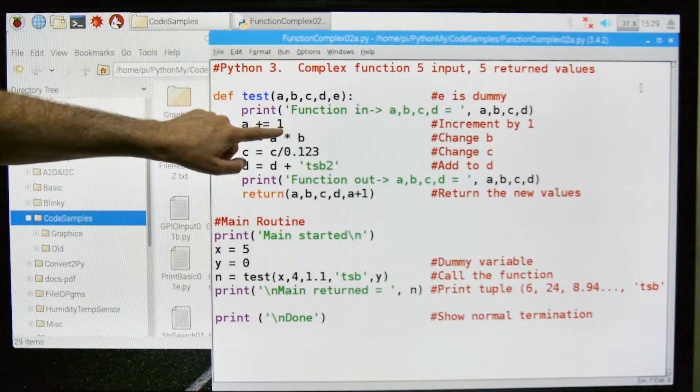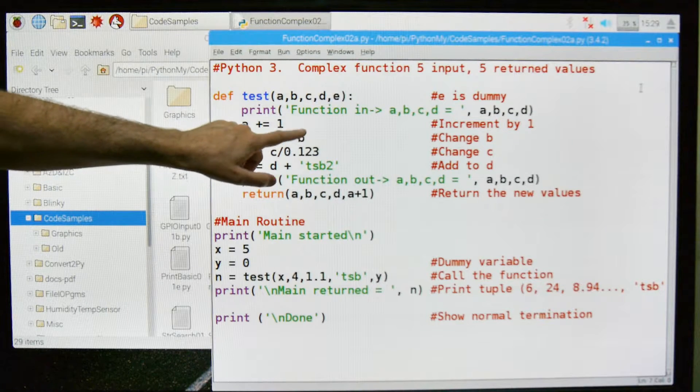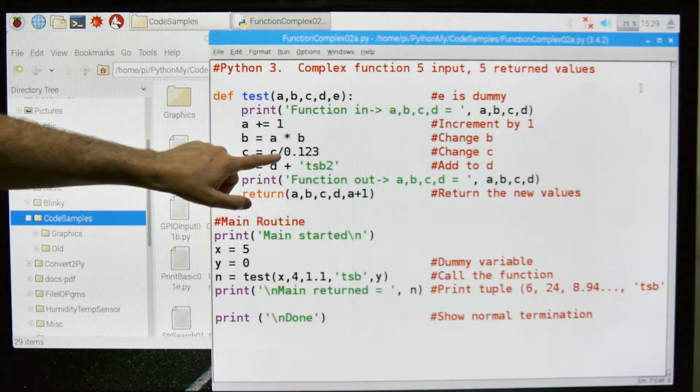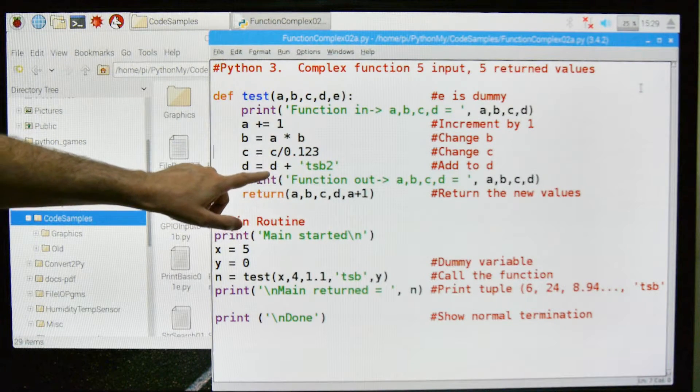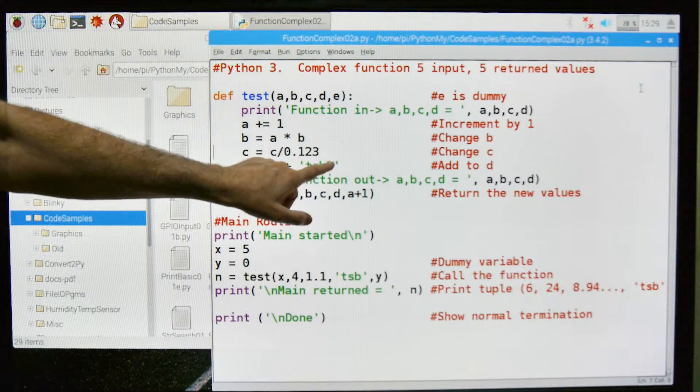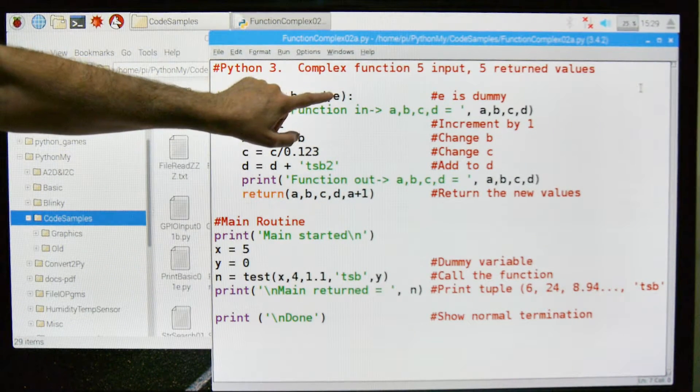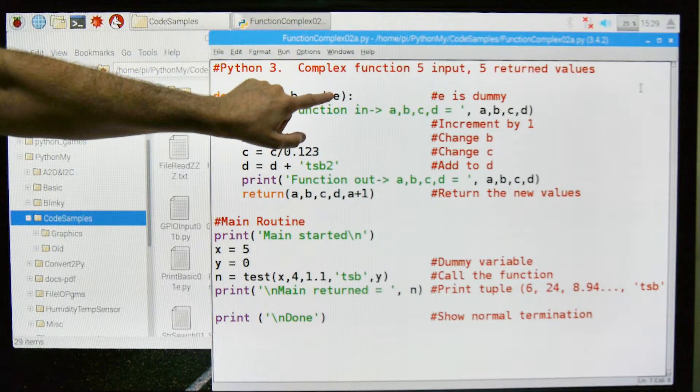a is incremented by 1, b is a times b, I'm just doing something to change the values. c is c divided by 0.123, and d I'm going to concatenate a TSB2 onto the original d. Notice I'm not doing anything with this e up here, I just need it as a dummy placeholder.